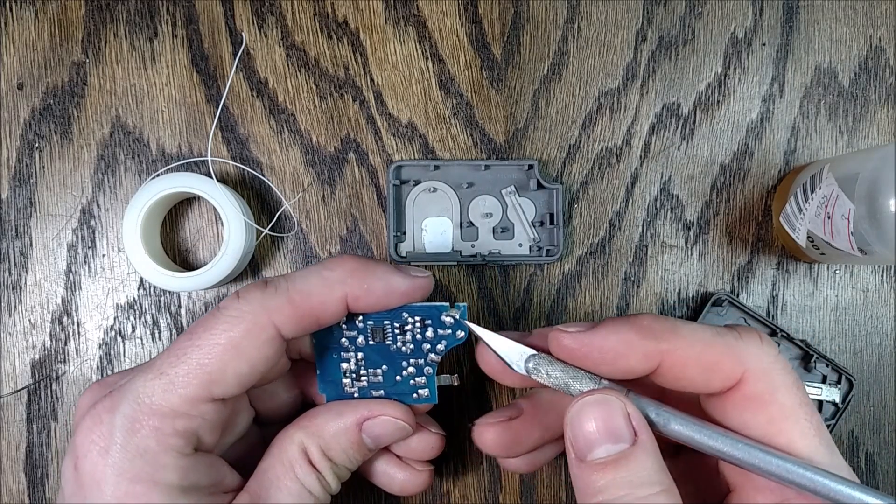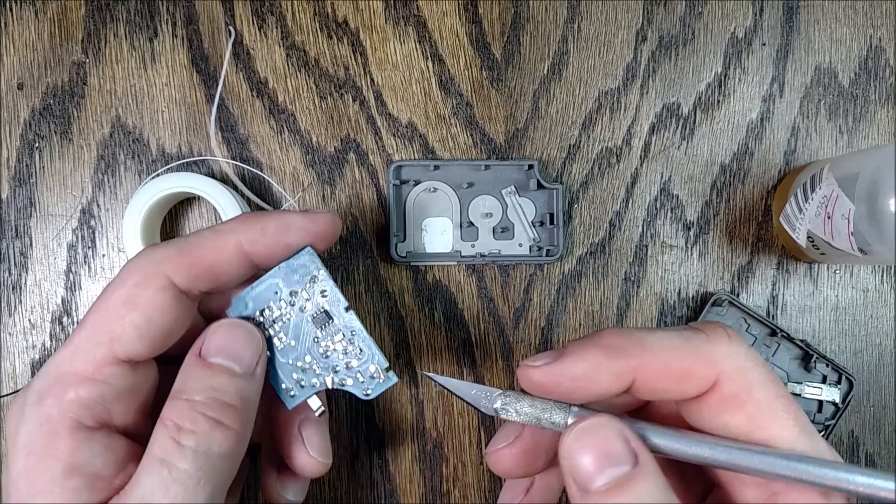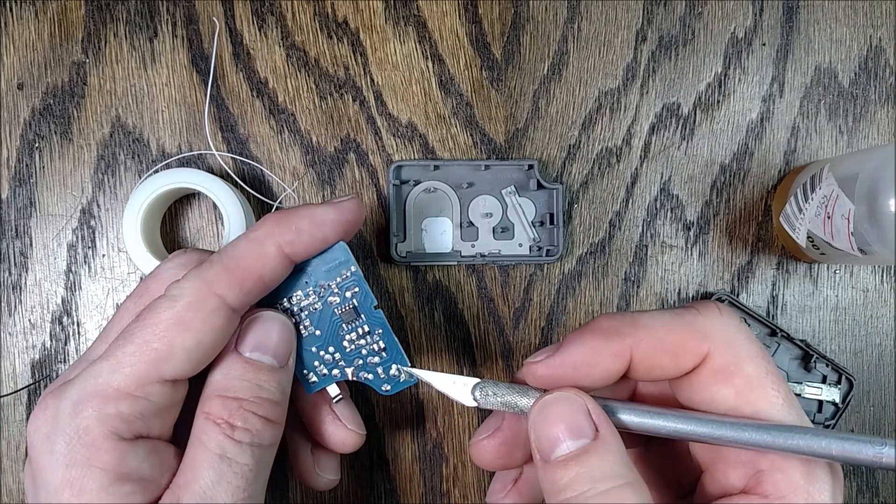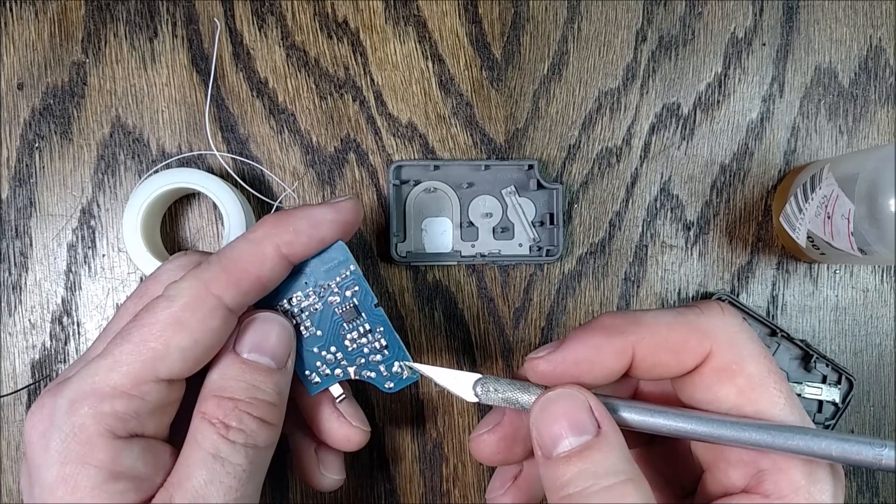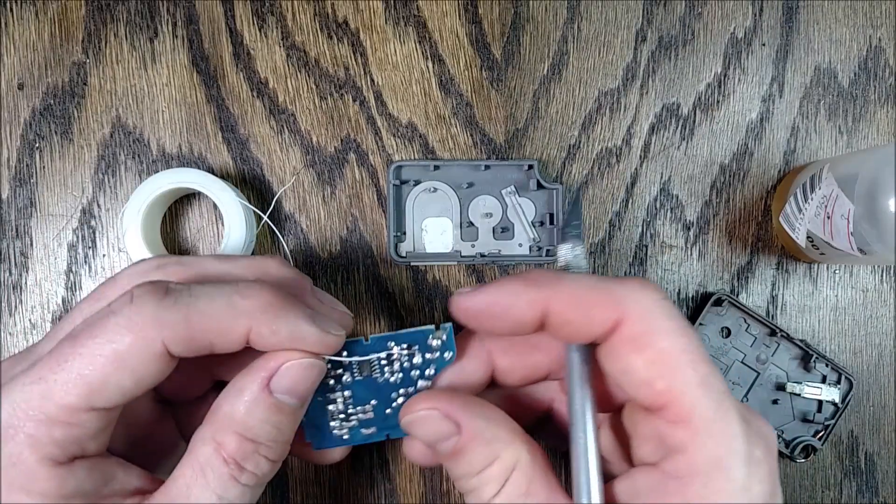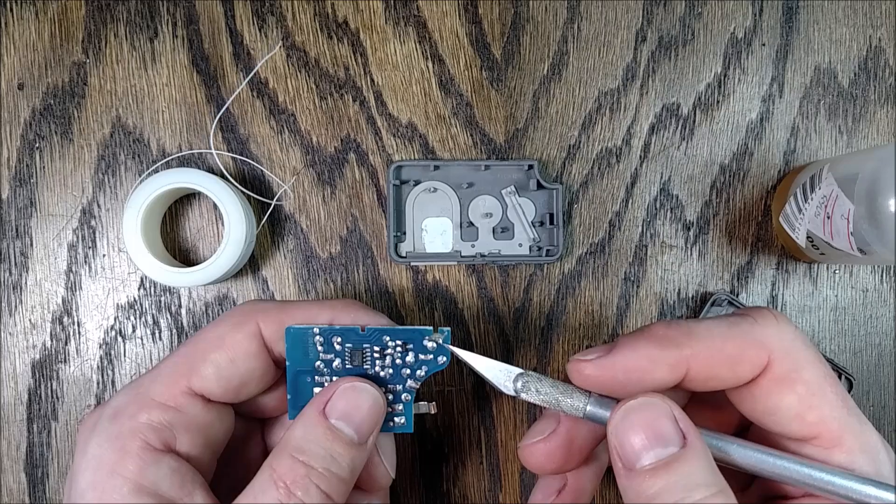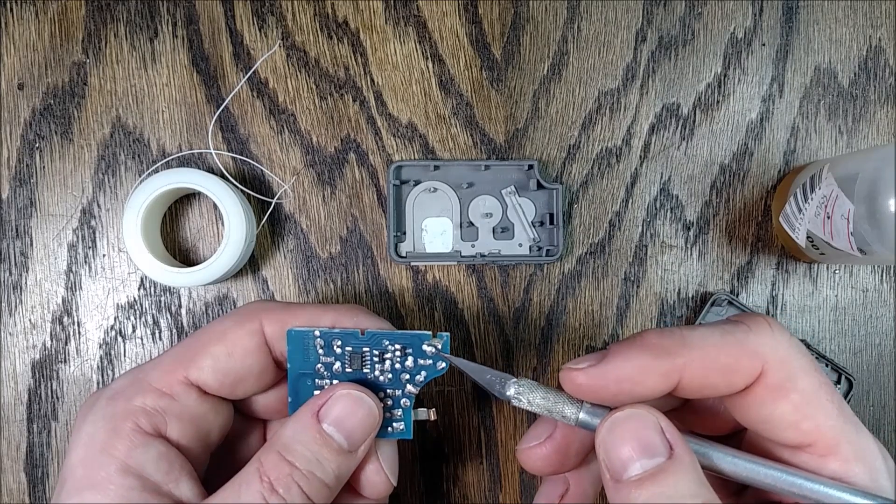So to fix that damaged trace in the circuit board, I cleaned up the solder joint here and I took an exacto knife and I scraped away the solder mask up the trace a little bit here to get to some good copper. Then I took a fine piece of wire wrap wire and laid it on the trace there and soldered it down, so that should be making a good connection now.